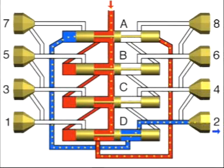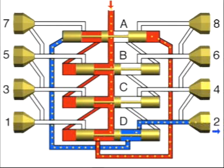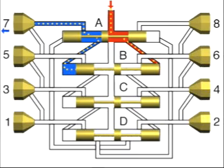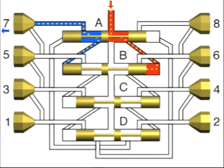The lubricant enters the metering device from above and flows to the right-hand end of piston A. Piston A is moved to the left under the pressure of the lubricant, causing the lubricant ahead of the left-hand end of piston A to be dispensed to outlet 2. Once piston A has reached its left-hand final position, the junction channel to the right-hand end of piston B is opened. The lubricant which arrives from above also moves piston B to the left, causing the lubricant quantity ahead of the left-hand end of piston B to be dispensed to outlet 7.